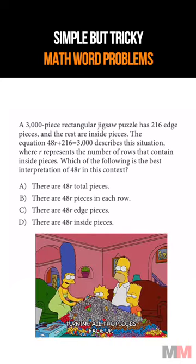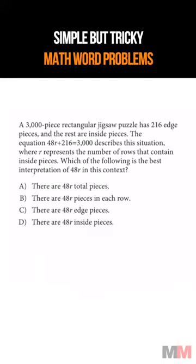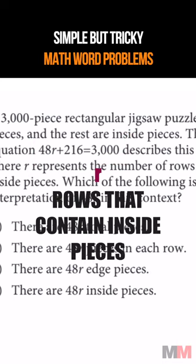Here are some common word problems. A 3,000 piece rectangular jigsaw puzzle has 216 edge pieces and the rest are inside pieces. It is defined by this equation where R represents the number of rows that contain inside pieces.